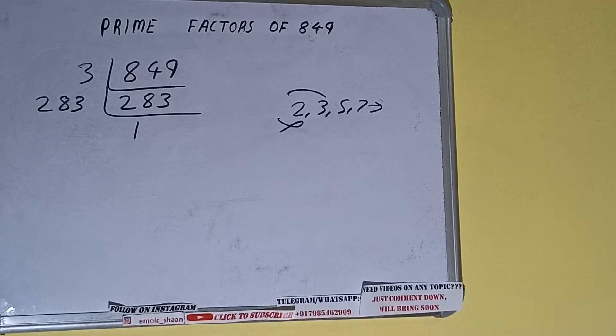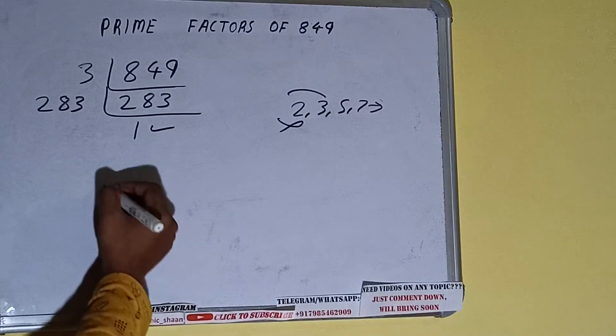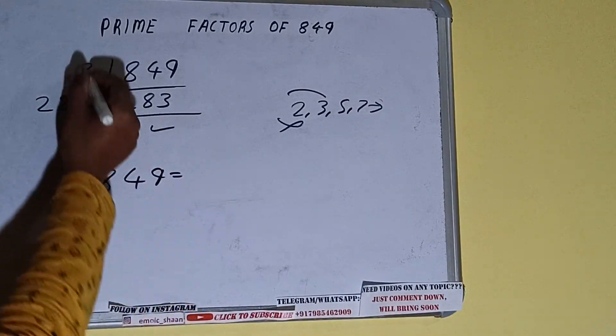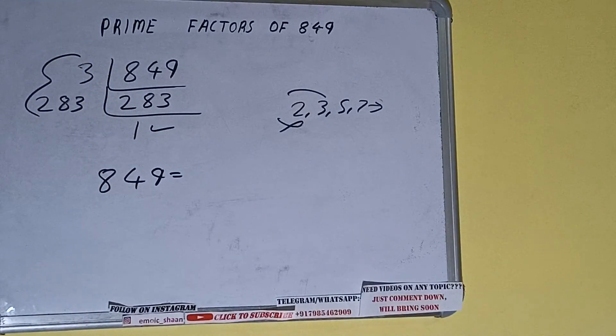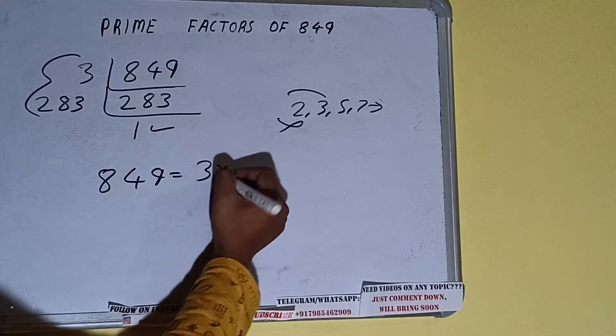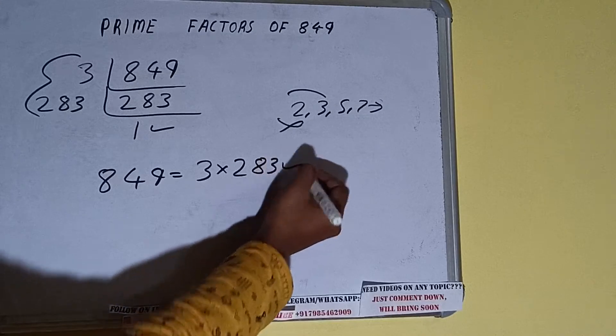Once we get 1, we need to stop and do one last thing. The prime factors of 849 equals multiplying whatever we have on the left-hand side, that is 3 times 283. That will be the answer.